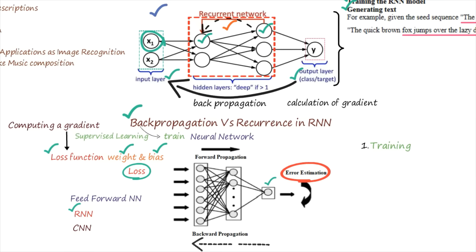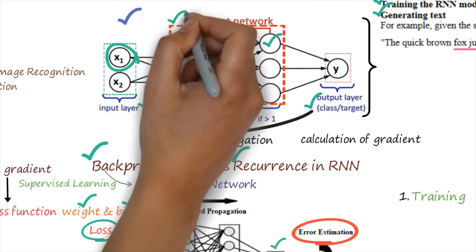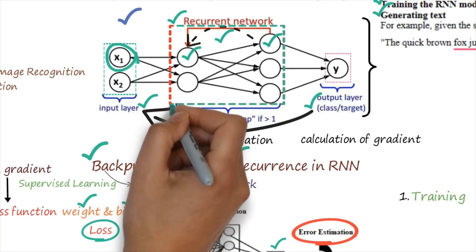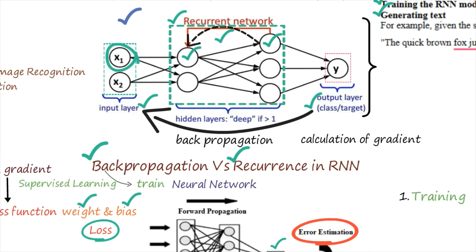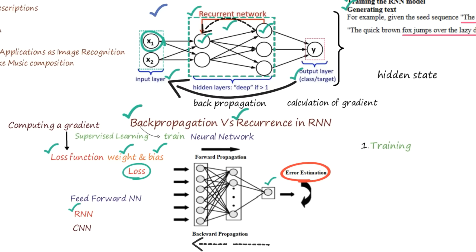Whatever output we are getting in the output layer, in order to minimize the error, we will backpropagate this error, and the flow of execution will be from output layer to input layer. This is the main agenda of backpropagation. Now, what do you mean by recurrence in RNN? The first difference is the flow — the recurrence exists inside the hidden layer, not from output to input. This recurrence happens between the hidden neurons. Recurrence refers to the ability of the RNN model to maintain the hidden state.